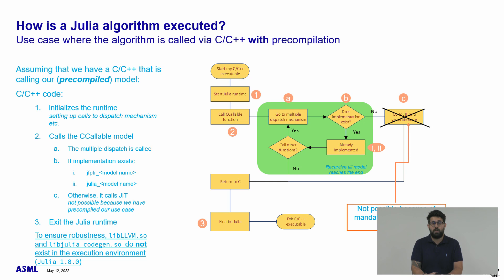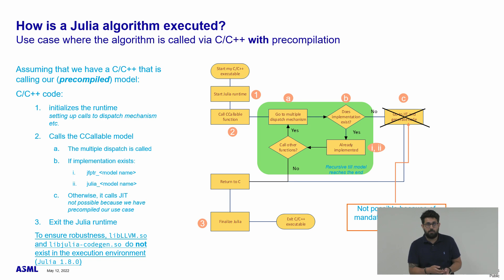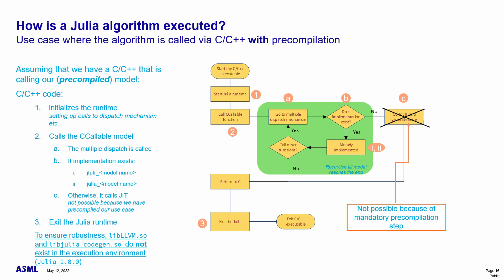In the second situation, the C++ executable is linked with the pre-compiled Julia library containing the application to deploy. The C++ initializes the Julia runtime, setting up the dispatch mechanism. After preparing the entire environment, it calls the C-callable interface entry point of our model function. The multiple dispatch mechanism selects the appropriate function in the lookup table matching the C-callable function. Since the code is pre-compiled, the JIT step is skipped. It is guaranteed that whenever the multiple dispatch call is in place, the code to be invoked is already present in memory, so execution continues directly to the entry point of the pre-compiled code.